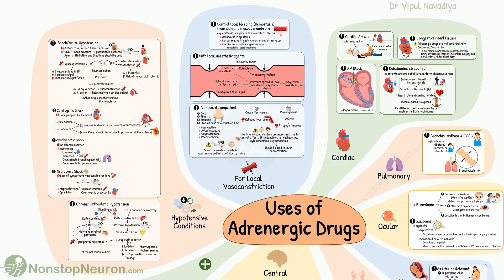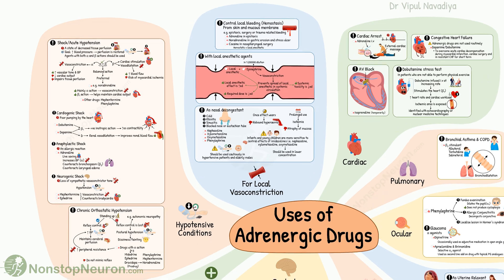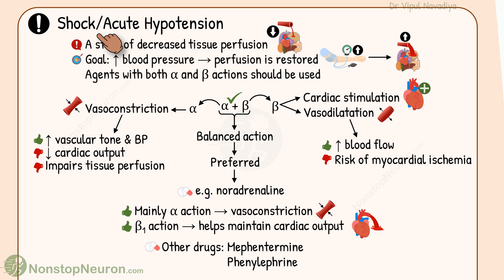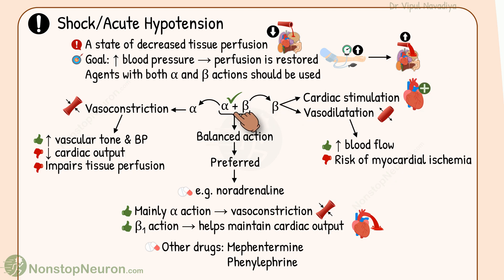Let's start with the cardiovascular system, where first we will see the uses in hypotensive conditions. Adrenergic drugs are commonly used in shock or acute hypotension. Shock is a state of decreased tissue perfusion due to a drastic fall in blood pressure. Our goal is to increase blood pressure so that perfusion is restored. Agents with both alpha and beta actions should be used under such conditions.